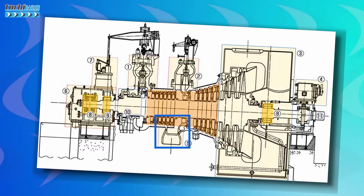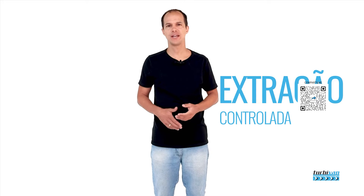Extractions are found in both condensing turbines and counter-pressure turbines, and they can even have more than one extraction in the same turbine. Extractions can be classified as controlled extractions, which is when the turbine has an internal device assembly to control the steam outlet pressure.